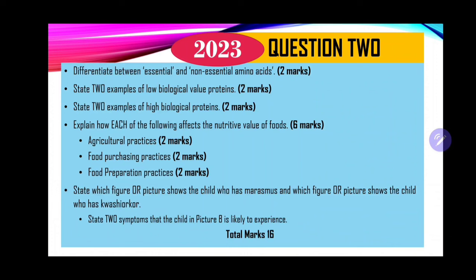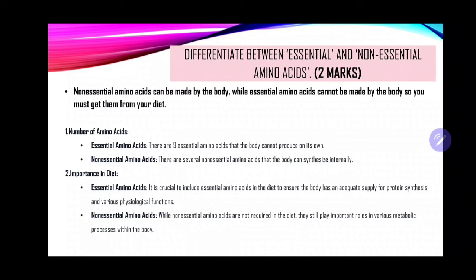The last part of the question says you're supposed to state two symptoms that a child in picture B is likely to experience. Now let's take a look at the ideal answers. The first part, 2A, asks you to differentiate between essential and non-essential amino acids.